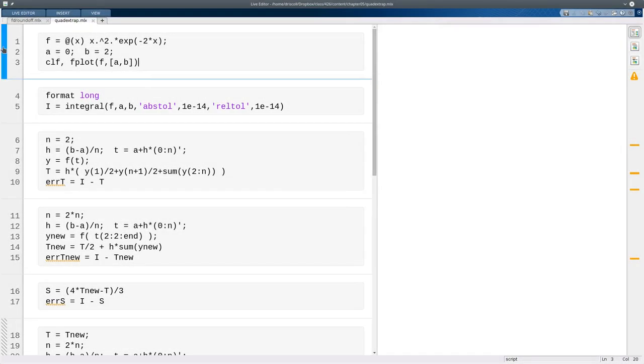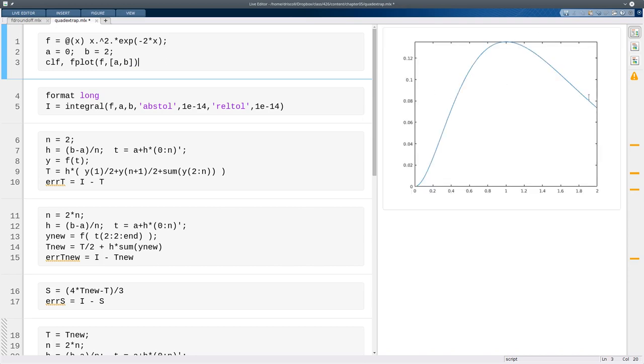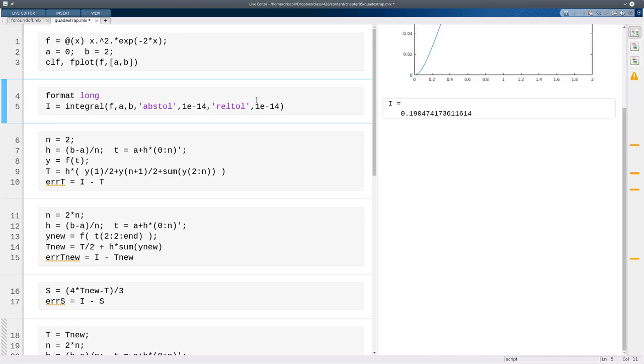Here I've defined a nice smooth function and an interval. So we can take a look at it here. And this is what I want to integrate. Now, if we thought about it, we could probably integrate this particular function exactly. But let's just have MATLAB's built-in integration function give us an accurate number for it. I'll start off with just two intervals, and I'm setting up nodes for that value of n.